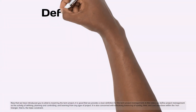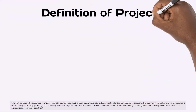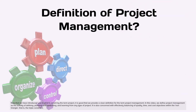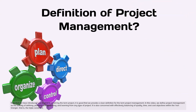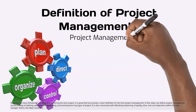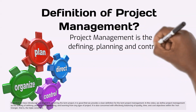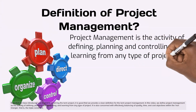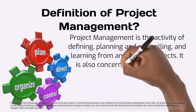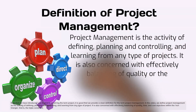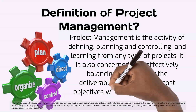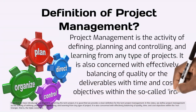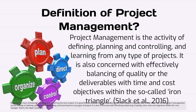Now that we have introduced you to what is meant by the term project, it is good that we provide a clear definition for the term project management. We define project management as the activity of defining, planning and controlling, and learning from any type of project. It is also concerned with effectively balancing quality, time, and cost objectives within the iron triangle — that is, the triple constraint.